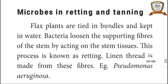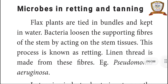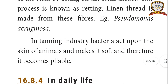Microbes in retting and tanning. In retting, flax plants are tied in bundles and kept in water; bacteria loosen the supporting fibers of the stem by acting on stem tissue. This process is known as retting, and linen thread is made from these fibers. Example: Pseudomonas aeruginosa. In the tanning industry, bacteria act upon the skin of animals, making it soft and pliable.